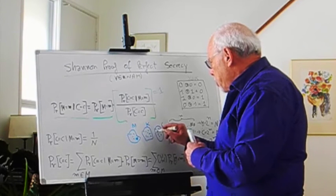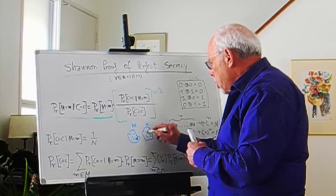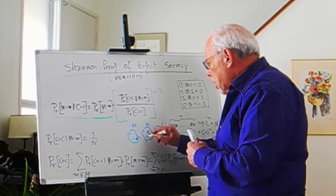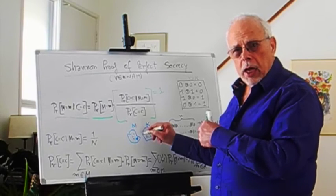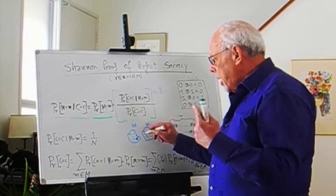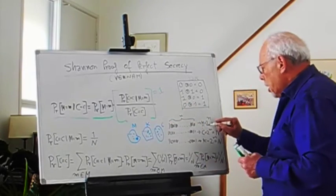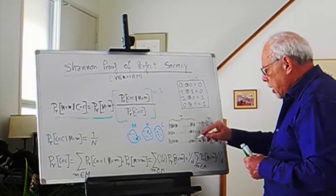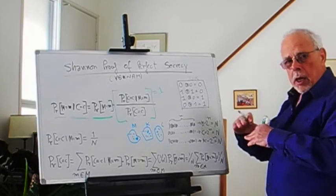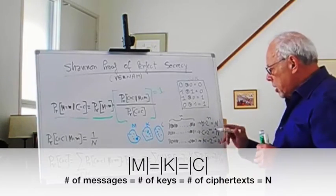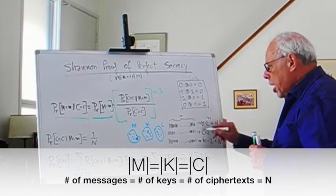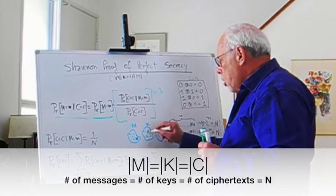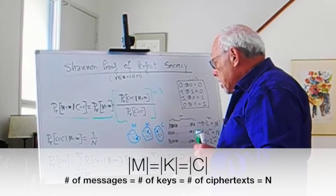This particular k is one out of how many? If there are n bits to the message, to the key, to the ciphertext, then there are 2 to the power of n many possibilities of strings. We call it N, so there are N possibilities.